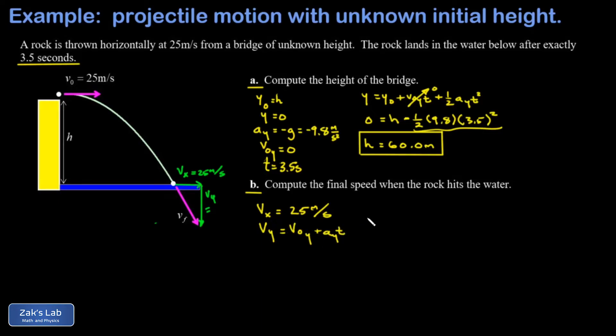where the acceleration of the Y direction, again, is just given by negative 9.8 meters per second squared. Remember our initial Y velocity is zero. So I simply have negative 9.8 meters per second squared times 3.5 seconds. This gives me a final Y velocity of negative 34.3 meters per second. So in my diagram, that's just a downward component with a length of 34.3.